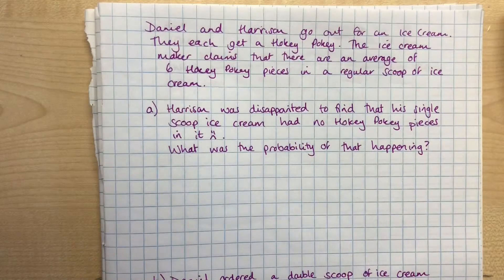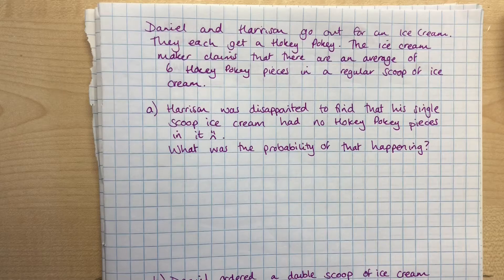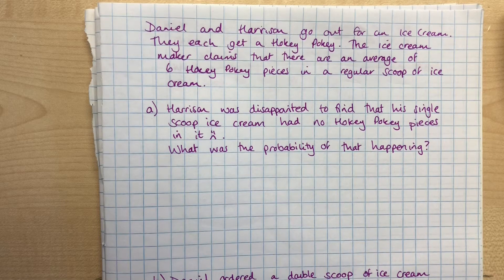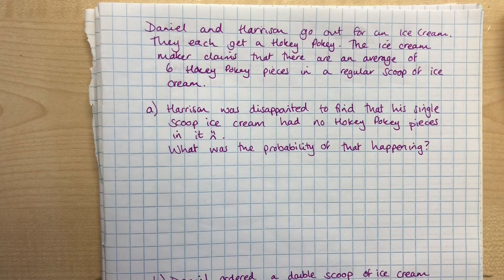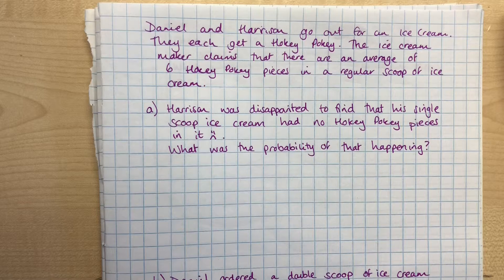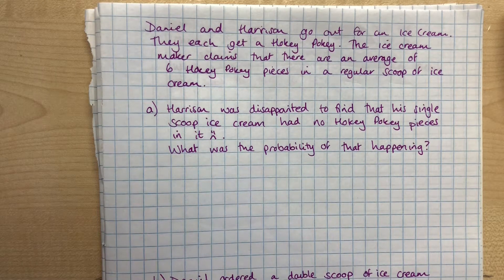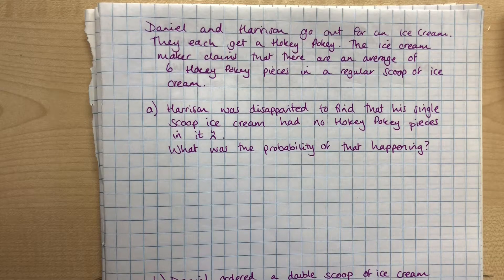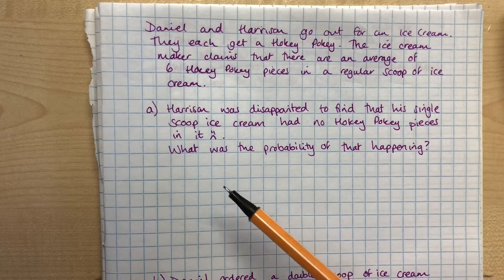We've got this question where Daniel and Harrison are going out for ice cream. They each get Hokey Pokey ice cream, which if you're not from New Zealand you might not know. It's a type of ice cream which is pretty awesome - it's got pieces of Hokey Pokey honeycomb in it. These chunks of Hokey Pokey are randomly distributed throughout the ice cream, and the ice cream maker claims that there are on average six Hokey Pokey pieces in a regular scoop of ice cream. So Harrison gets his ice cream and unfortunately discovers that he has no Hokey Pokey pieces in his ice cream.